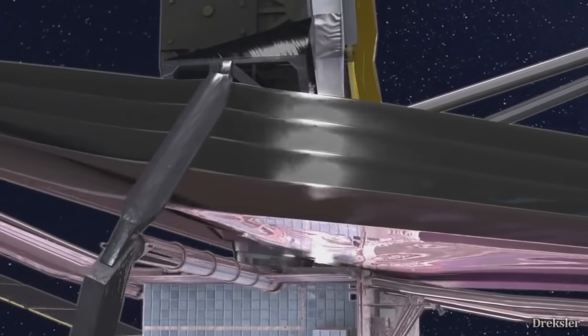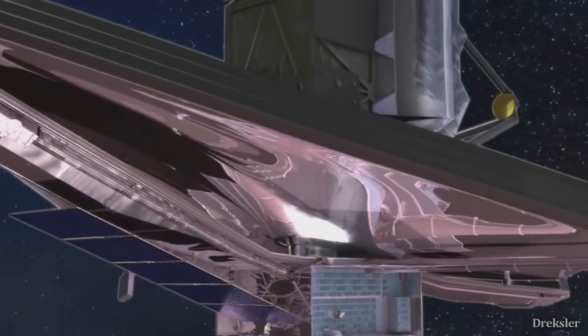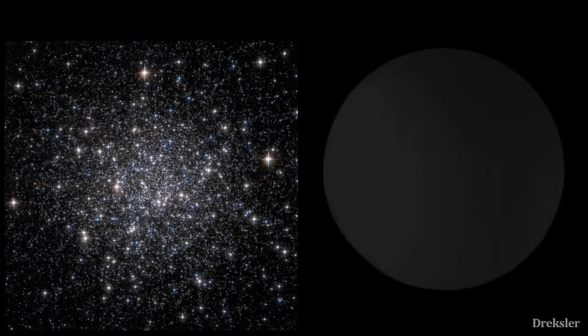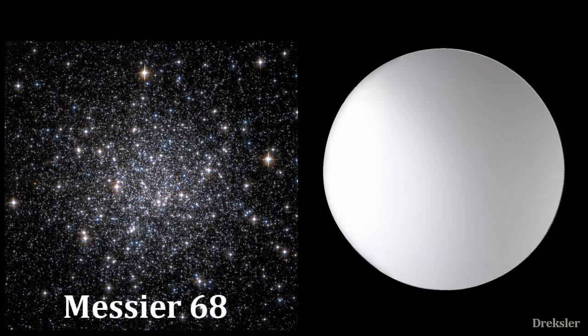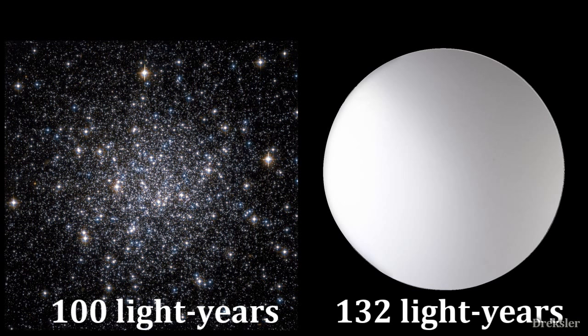Meaning from one side of the mirror to the other side, it takes light 132 years to travel. To get a perspective, a very big star cluster such as Messier 68 is 100 light years across, which is smaller than this supposed alien telescope.